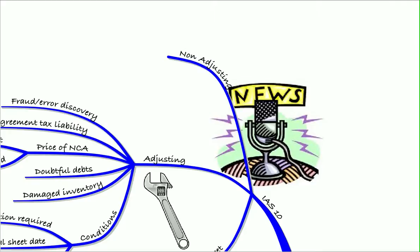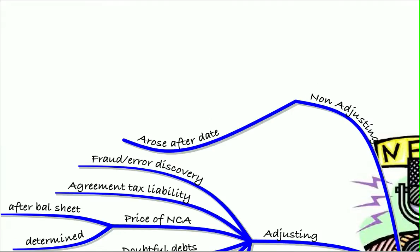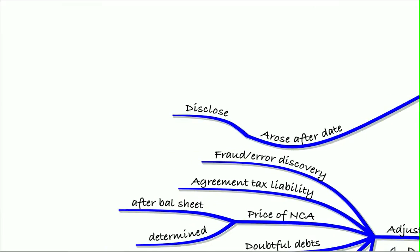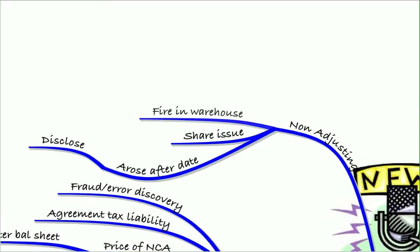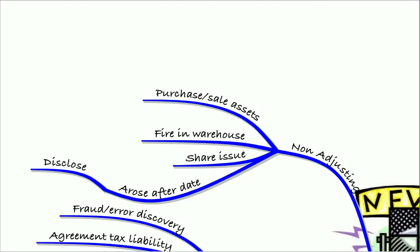As opposed to non-adjusting events. Remember, these are things that actually arose after the balance sheet date, and what we need to do is disclose these rather than adjust the financial accounts for them. So that could be a share issue, a fire in a warehouse, or the purchase or sale of significant assets. All of those need to be disclosed to the users because they're significant events that happen just after the balance sheet date.